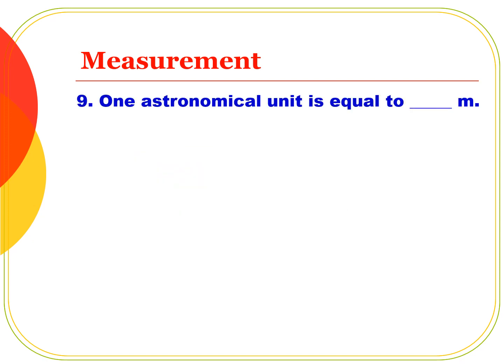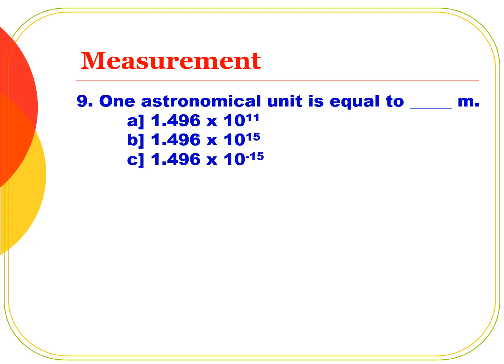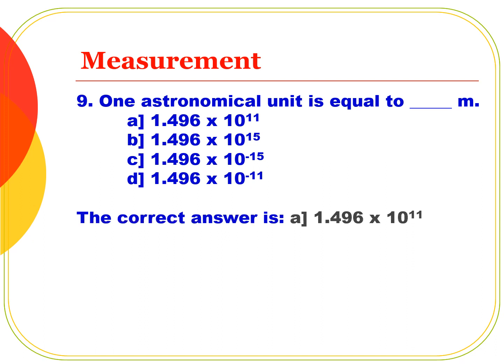One astronomical unit is equal to how many meters? An astronomical unit is the average distance from the Earth to the Sun. Option A: 1.496 × 10¹¹. Option B: 1.496 × 10¹⁵. Option C: 1.496 × 10⁻¹⁵. Option D: 1.496 × 10⁻¹¹. The correct answer is Option A — 1 astronomical unit = 1.496 × 10¹¹ meters.